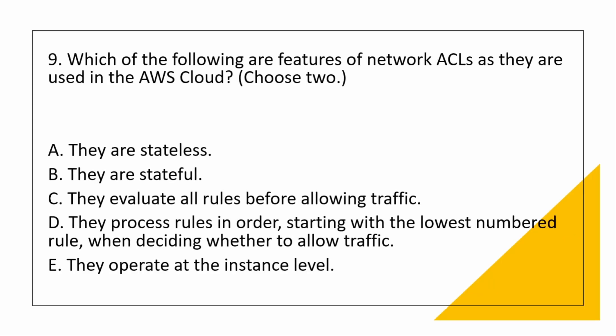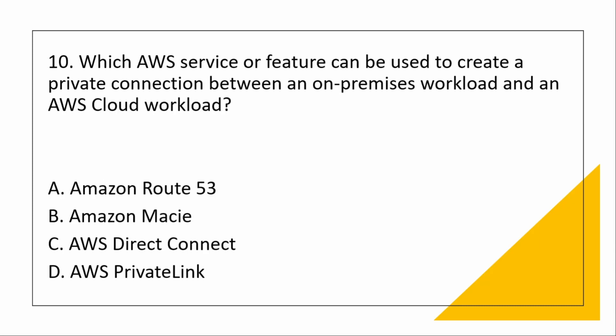Which of the following are features of NACLs in the AWS cloud? NACLs are stateless — correct. They are stateful — No. They evaluate all rules — No, NACLs process rules in order, starting with the lowest-numbered rule, then decide whether to allow traffic. They operate at the instance level — No, NACLs operate at the subnet level.